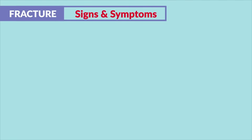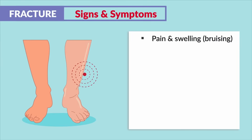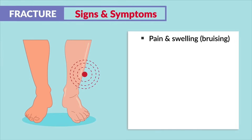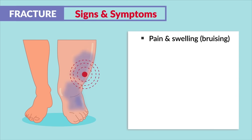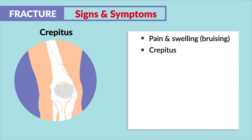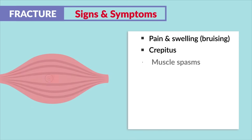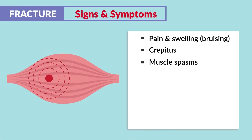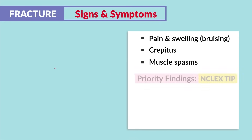The signs and symptoms are pretty simple. With any type of fracture we'll see a lot of pain, swelling, bruising, and crepitus — which is a grinding sound as the bones or cartilage rub together — and muscle spasms.